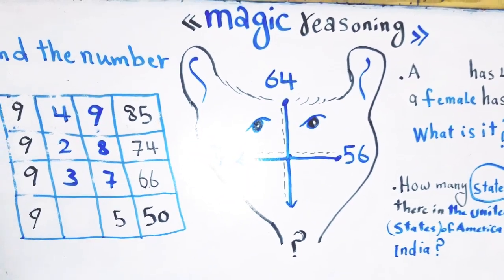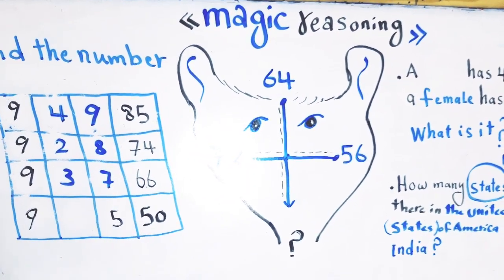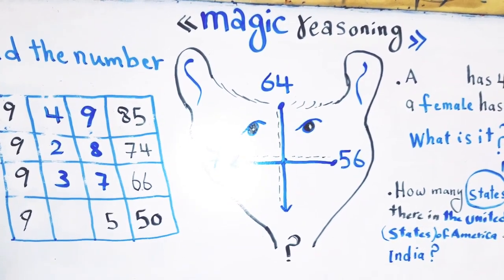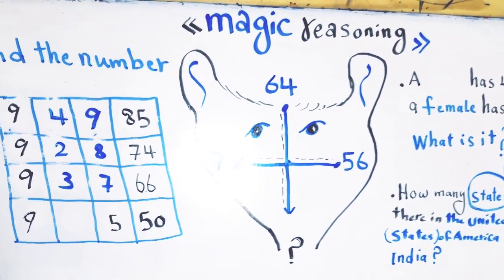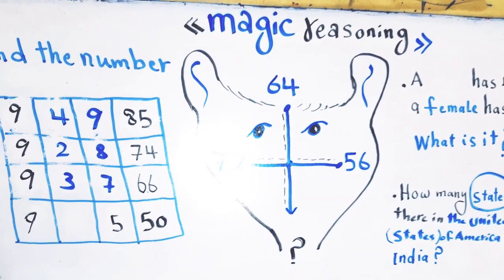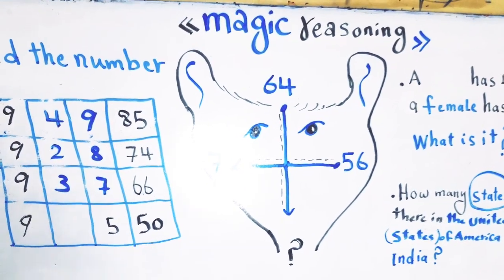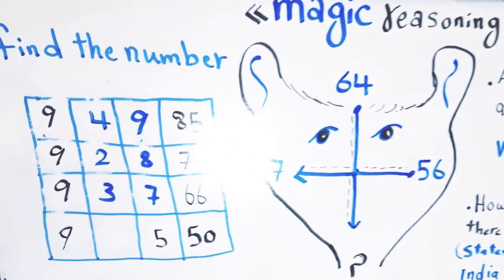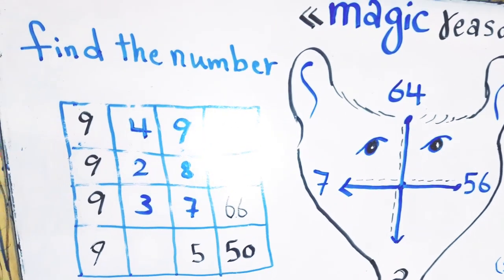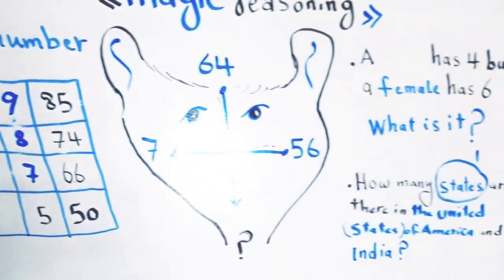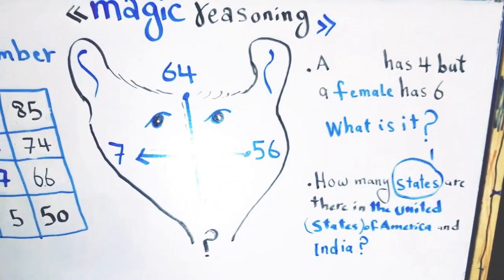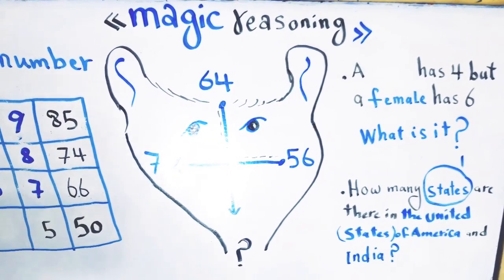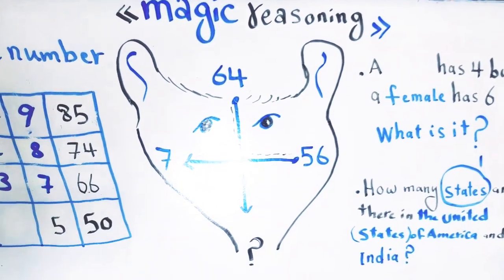Hello everyone, welcome to Easy Math channel. Today I'm presenting a lecture on how to use our magic reasoning, our power of observation, in order to solve any problem we can face in the world. In this episode I'm presenting three puzzles to which I'm applying my power of observation in order to reach the answer.